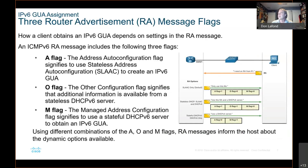There are three router advertisement message flags. How a client obtains an IPv6 Global Unicast Address depends on the settings in the router advertisement message. The A flag indicates address auto configuration — it signifies to use stateless addressing auto configuration, SLAAC, to create an IPv6 address. Basically everything is automatic. A is for auto configuration.